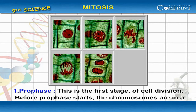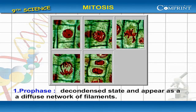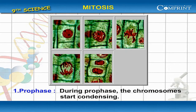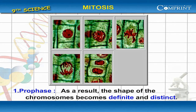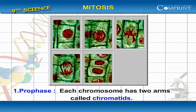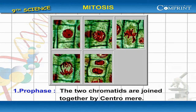Prophase. This is the first stage of cell division. Before prophase starts, the chromosomes are in a decondensed state and appear as a diffuse network of filaments. During prophase, the chromosomes start condensing. As a result, the shape of the chromosomes becomes definite and distinct. Each chromosome has two arms called chromatids. The two chromatids are joined together by the centromere.